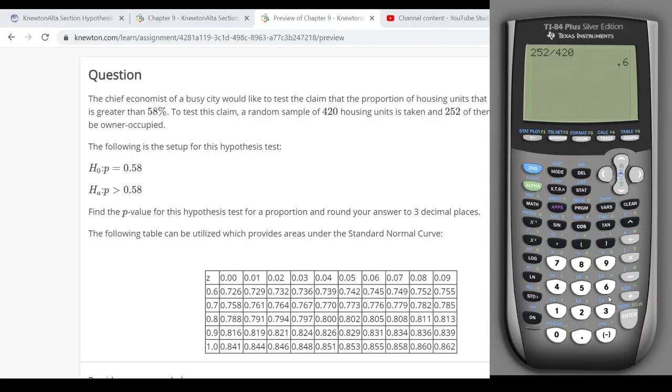And then I find the test statistic. Remember, this is a z-score, because the distribution of sample proportions was normal, or approximately normal. So we're going to find the z-score for this.